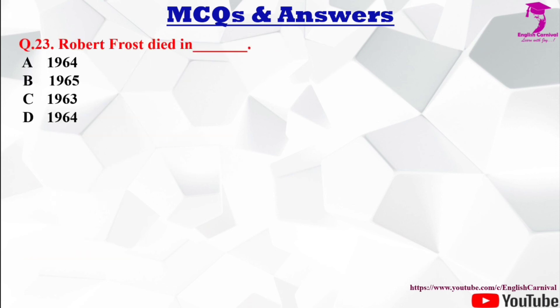Question number 23: Robert Frost died in ___. Options: A) 1964, B) 1965, C) 1963, D) 1964. The correct answer is C — he died in 1963.